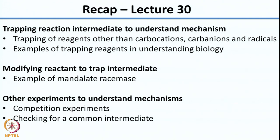Towards the end we had looked at other experiments to understand mechanisms. We saw competition experiments where you add 2 traps so that once you form the intermediate it can be trapped by 2 reagents, and depending on the ratio of products you get an idea about the nature of the intermediate. The last example was where you start with 2 reactants which could lead to the same intermediate, giving a single product — an indirect way to tell you the same intermediate was formed from both reactants.